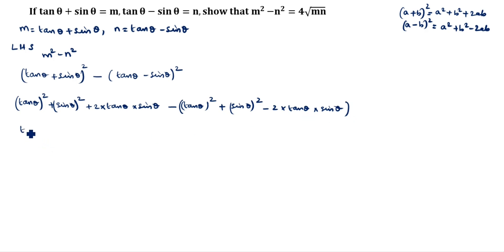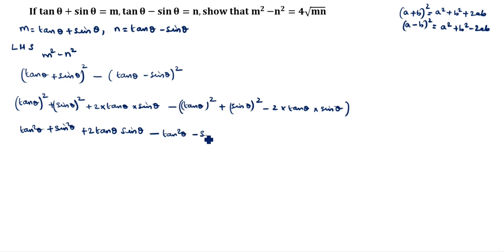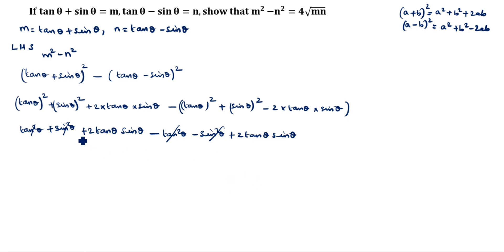Expanding: tan²θ + sin²θ + 2 tan θ sin θ - (tan²θ - sin²θ - 2 tan θ sin θ). Opening the bracket: +tan²θ and -tan²θ cancel, +sin²θ and -sin²θ cancel. What remains is 2 tan θ sin θ + 2 tan θ sin θ = 4 tan θ sin θ.